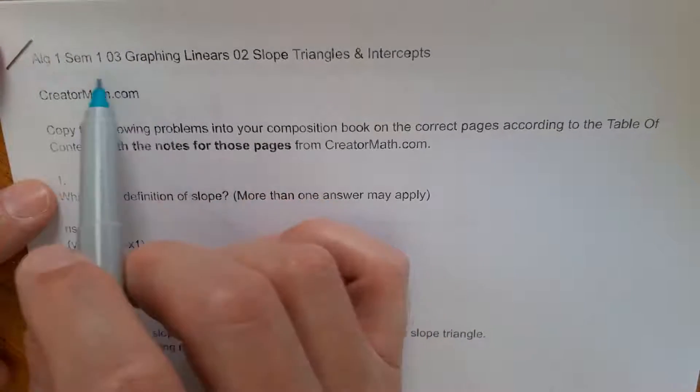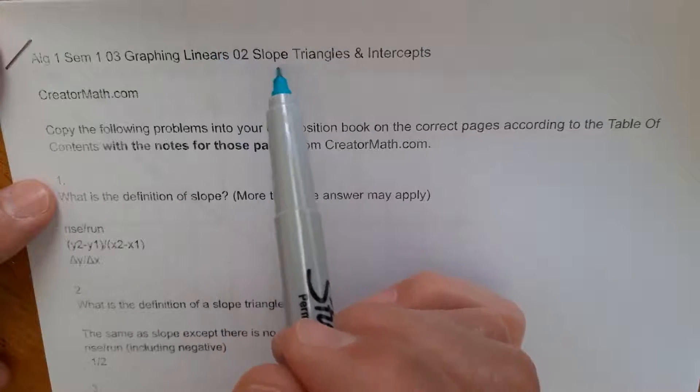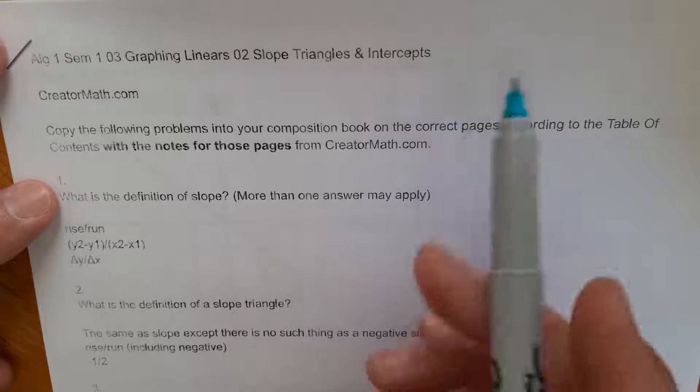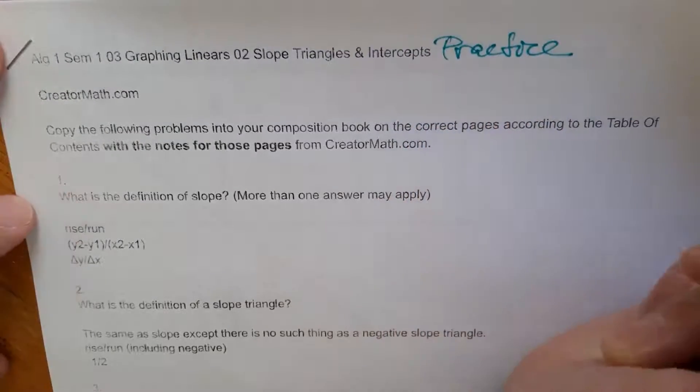This is Algebra 1, semester 1. It's the third unit called graphing linears, and it's the second lesson called slope triangles and intercepts. And usually I put a practice here, so let's put a practice on this.